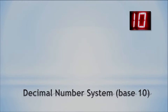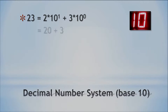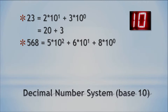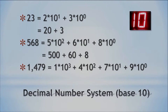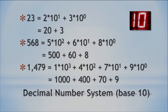For example, 23 — you break it down to 2 times 10 and 3 times 1, giving you 20 and 3. For 568: 5 times 100, 6 times 10, and 8 times 1. You can see the powers of 10 there. And 1,479 breaks down to 1 times 10 to the third, 4 times 10 squared, 7 times 10 to the first, and 9 times 10 to the zeroth — giving you 1,000 plus 400 plus 70 plus 9. Hopefully that makes sense.